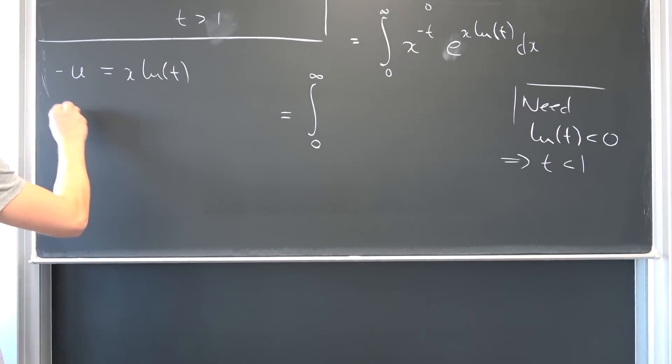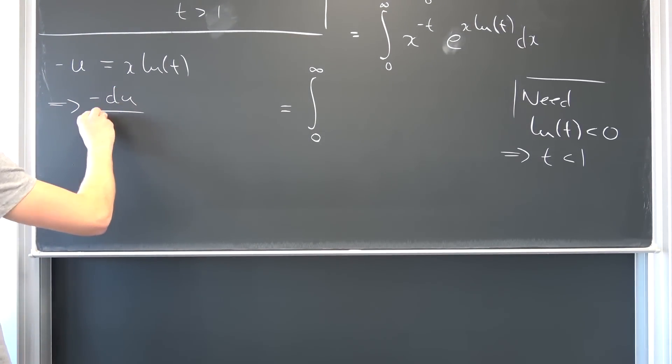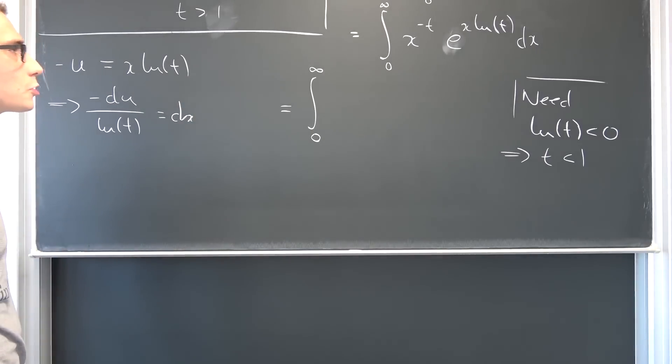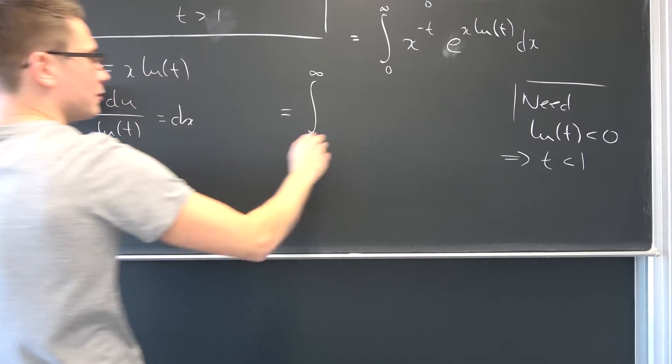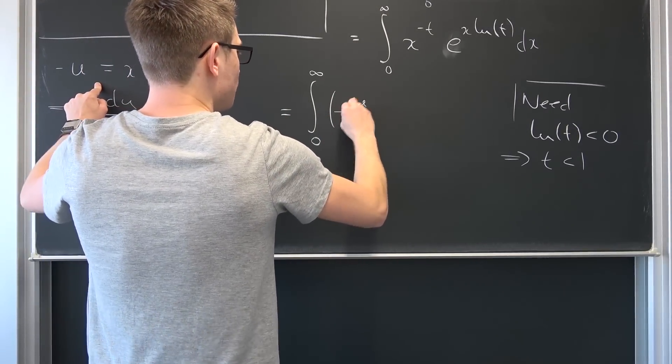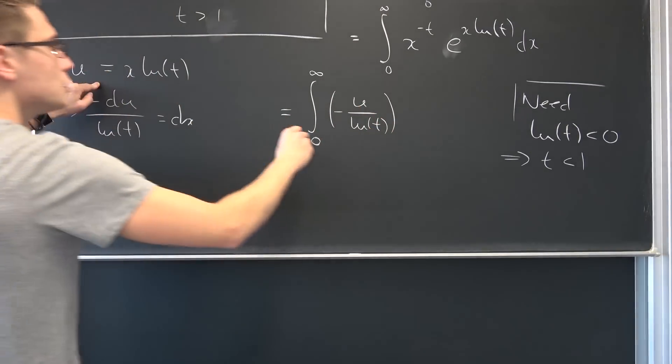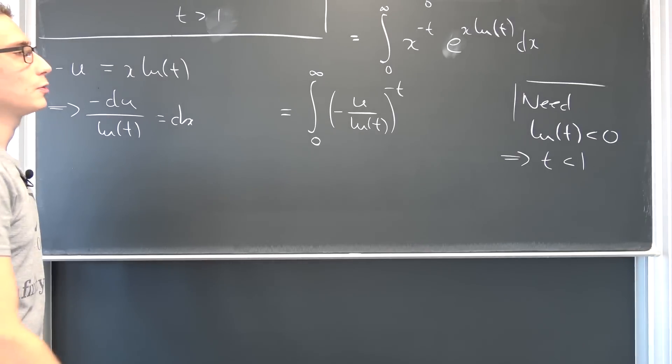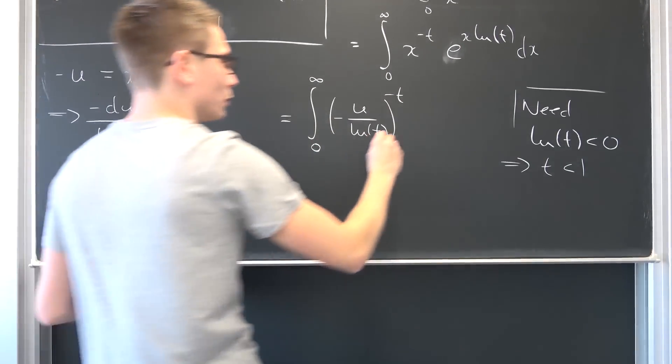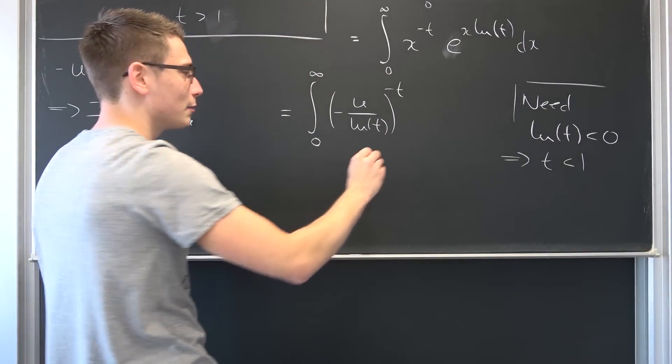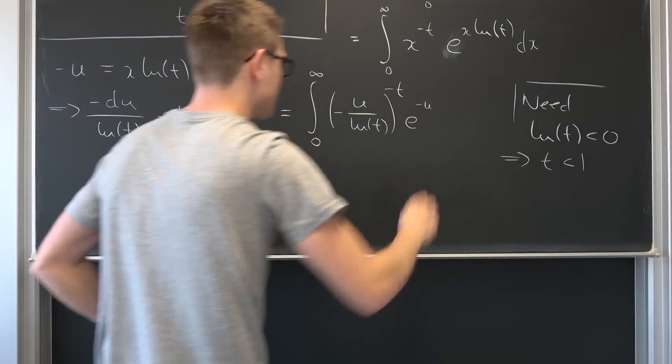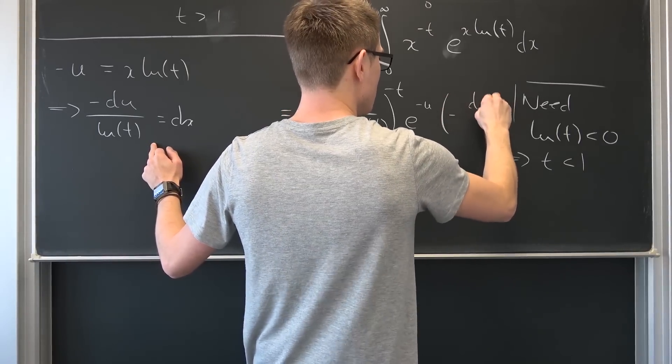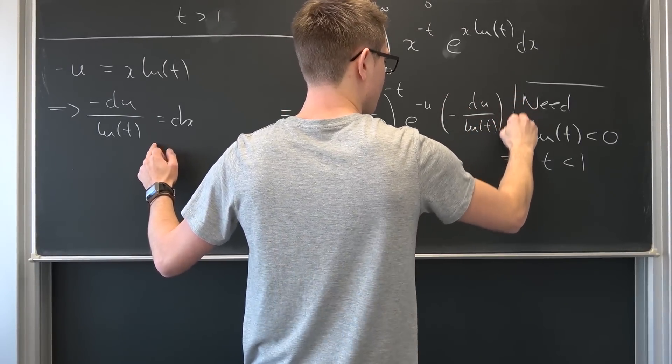Now we are going to go ahead and substitute everything in. Now x is nothing other than negative u over natural log of t. Also, we know that negative du over the natural log of t is nothing other than dx. We are going to plug everything in. We are going to get x being nothing other than negative u over the natural log of t to the negative t power, and also we are going to get e to the negative u. This is what we wanted. E to the negative u, and we know what the dx is, it's nothing other than negative du over the natural log of t.